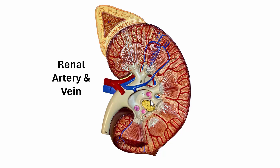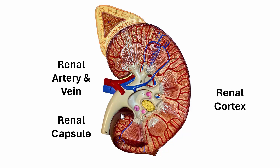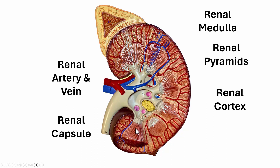Now looking at this more detailed model — which even has a kidney stone — we again have the renal artery and the renal vein. The renal capsule is this brown area; you can see it's kind of peeled away right here to show that it surrounds the whole kidney. The renal cortex — think bark of a tree — covers this whole area. And then we have the renal medulla, and these renal pyramids are found within the medulla.